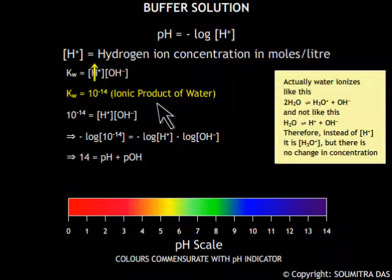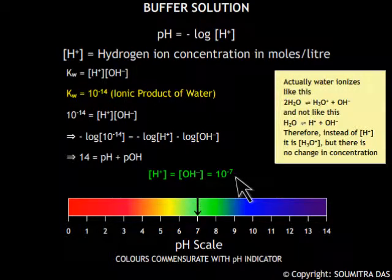As the hydrogen ion concentration increases, the pH decreases. As the hydroxyl ion concentration increases, the pH increases. When both the hydrogen ion and hydroxyl ion concentrations are equal, that is 10 to the power minus 7 moles per liter, then the pH is 7 and the solution is termed as neutral. A pH below 7 is acidic and above 7 is alkaline.